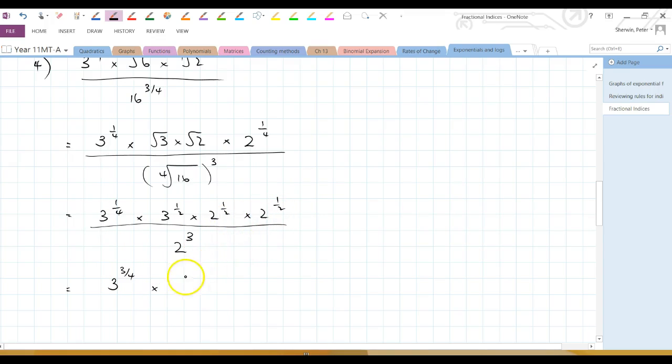Half plus a half is... that's not right. That's a quarter there. That's a half plus a quarter. So that's also 3 quarters. Half plus a quarter, 3 quarters. And this is all over 2 to the power of 3.